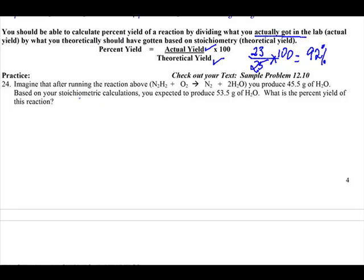We do the same thing in chemistry. We say, what should we get? So it says, imagine after running the reaction, you produce 45 grams of water. So that's what you actually did. So that goes on top. And then it says, based on your stoichiometric calculations, you expect to produce, this is what the math said you should.